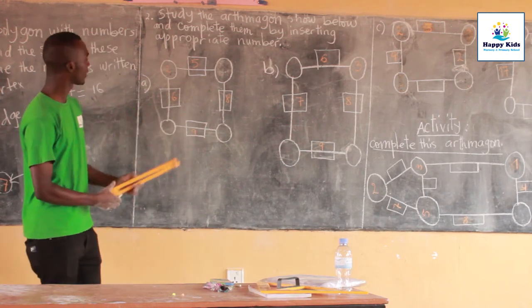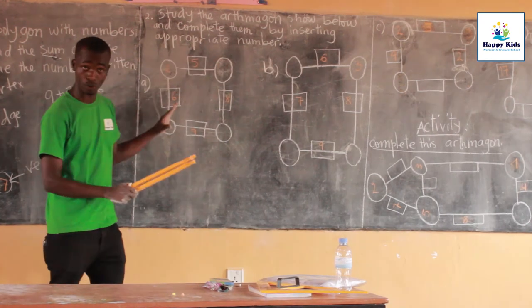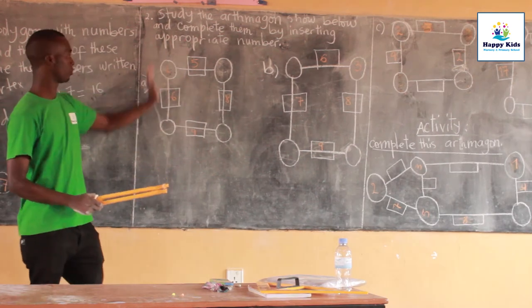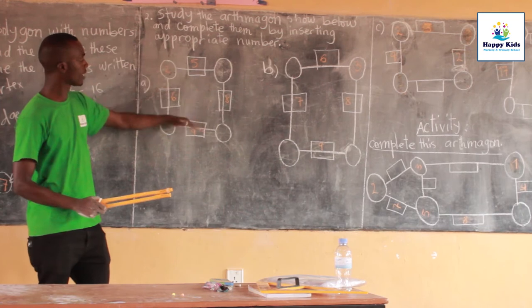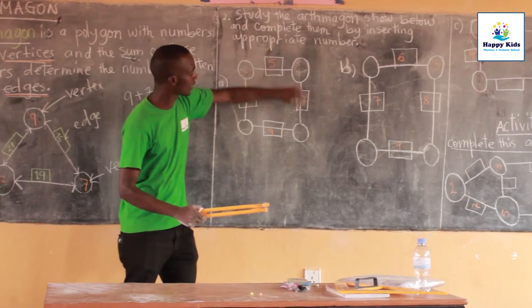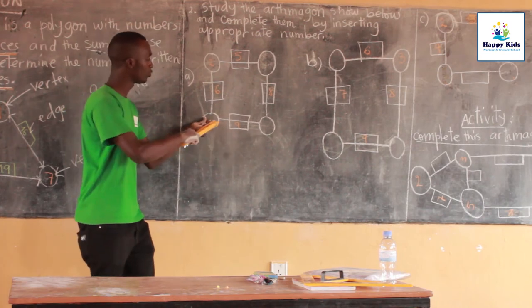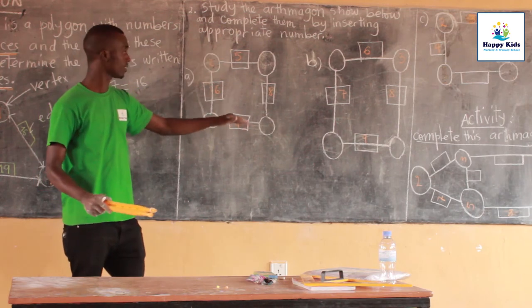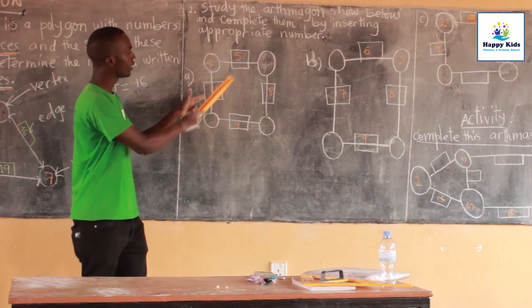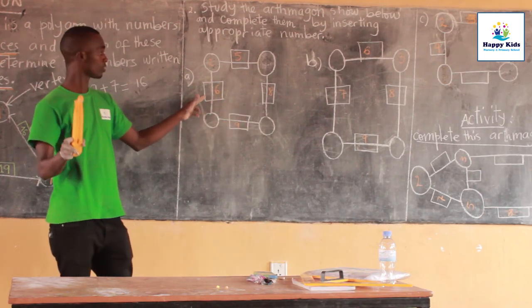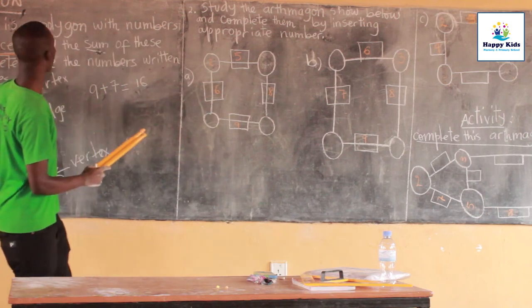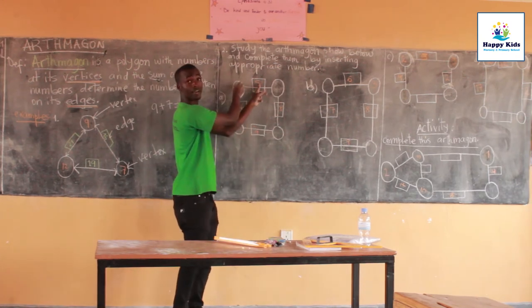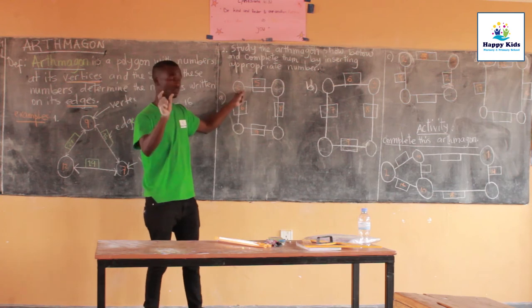For example, we have a polygon which is having four sides — let's say it can be a square or similar shape with four sides. So for this Alphimagon we have four vertices — one, two, three, four — and how many edges? One, two, three, four edges. The rule of the Alphimagon says to find the numbers at the edges. Here we have two in one vertex and five at the edge.